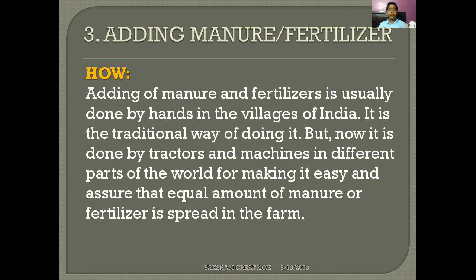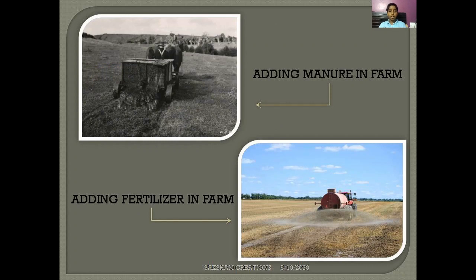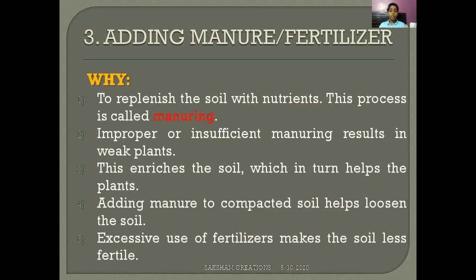How is manure or fertilizer added to the soil? Adding manure or fertilizer is usually done by hands in the villages of India — it is the traditional way of doing it. But now it is done by tractors and machines in different parts of the world, making it easy and ensuring an equal amount of manure or fertilizer is added across the farm. In the first picture, manure is added to the farm, and in the second picture, fertilizer is added.